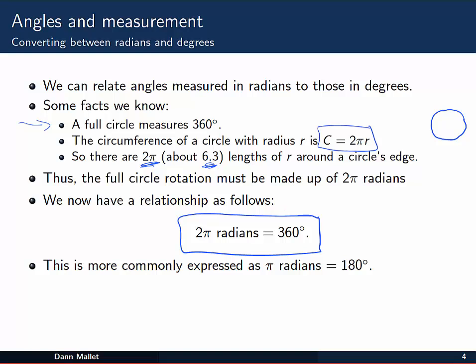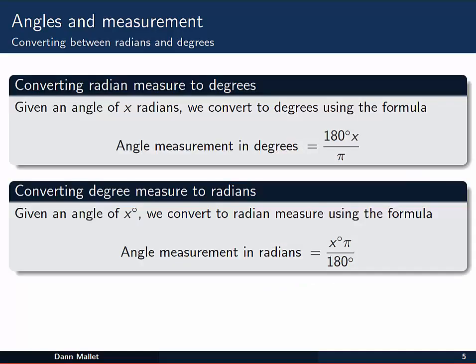You might also see it as π radians is equal to 180 degrees. So we can use that relationship to give us formulae for converting between radian measure and degree measure and back again.